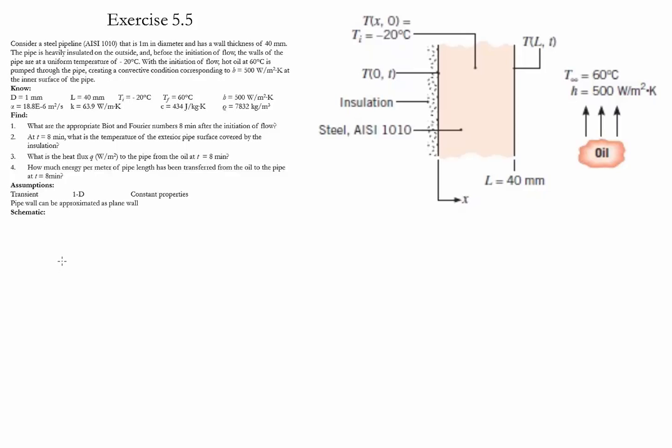The first step is to calculate the two non-dimensional numbers. The Biot number is defined as h times L over k. We use L as the characteristic length because we are using a plane wall. Using the values given in this problem, the Biot number is 3.13.